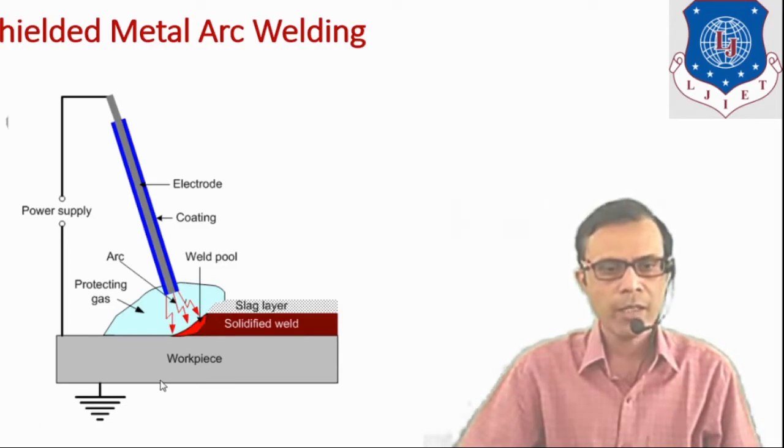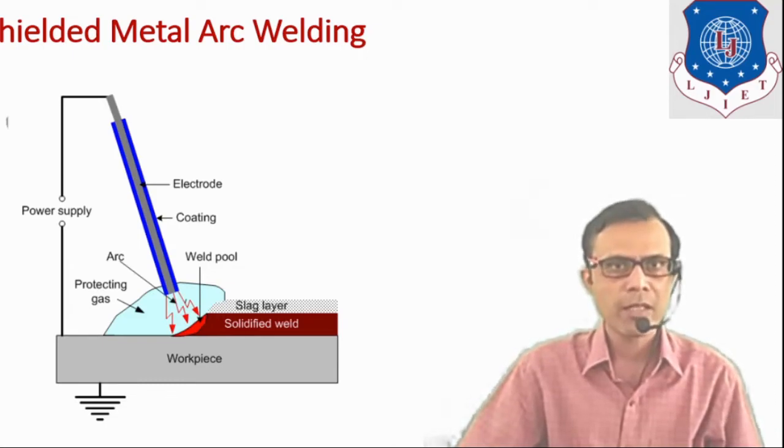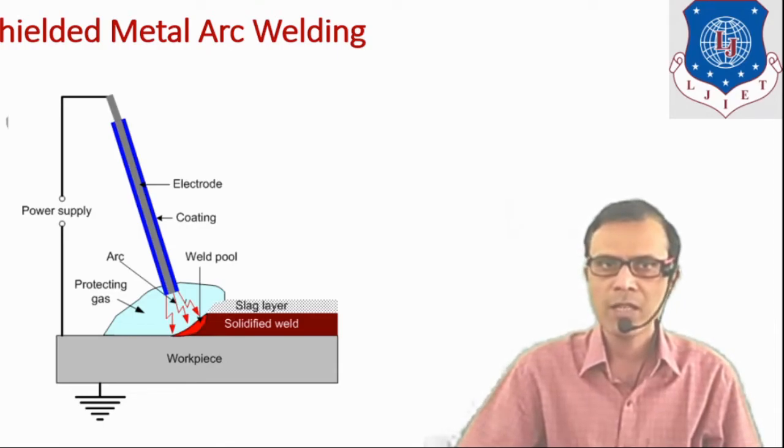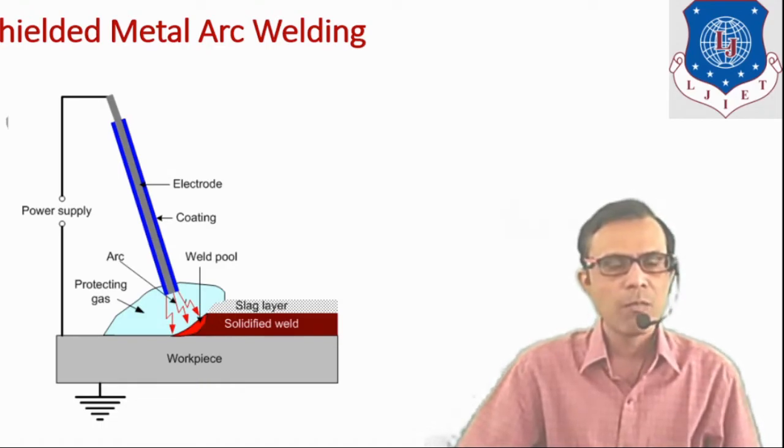Electrode and this workpiece both are connected to the power supply. About polarity, electrode is connected to the positive supply and workpiece is connected to the negative supply. Or reverse polarity may also be used. Depending on the requirement, polarity may be selected. If fast deposition rate of electrode is required, then electrode is connected with negative supply. And if faster rate of molten metal is required, then workpiece is connected to the negative polarity. So, depending on the requirement, the polarity may be adjusted.